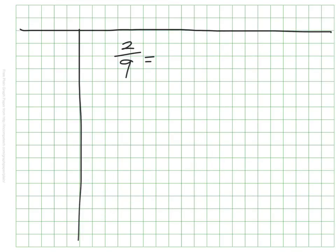Here's one you can try on your own. Let's see what 2/9 would be as a decimal by going through our division process. Pause the video, give it a try on your own, and then we'll see how you did.